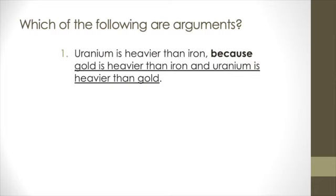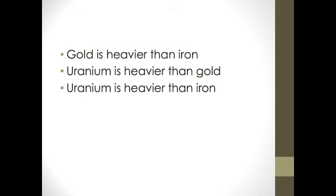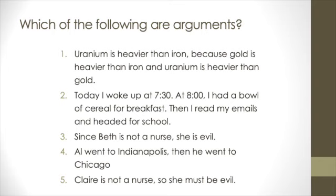Number one is an argument. Remember that we saw that because when followed by a statement, usually the statement in question is a premise. So, everything that is underlined is premise. The rest of the argument is a conclusion, namely that uranium is heavier than iron. In other words, this argument seeks to establish that uranium is heavier than iron, and gives us ground for that, the circumstance that gold is heavier than iron, and uranium is heavier than gold.